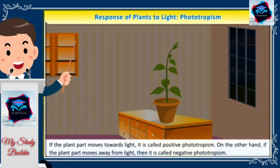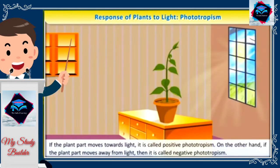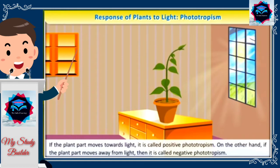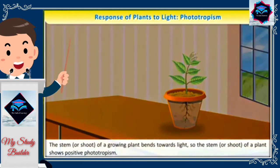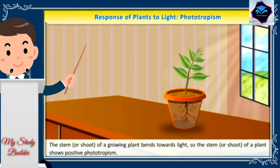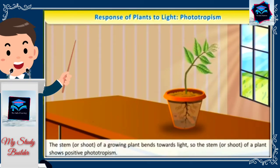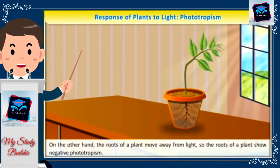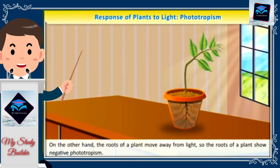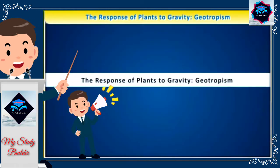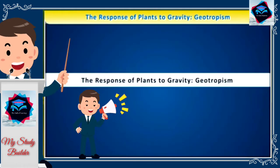On the other hand, if the plant part moves away from light, then it is called negative phototropism. The stem or shoot of a growing plant bends towards light, so the stem or shoot shows positive phototropism. The roots of a plant move away from light, so the roots show negative phototropism.